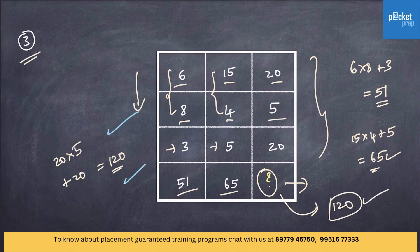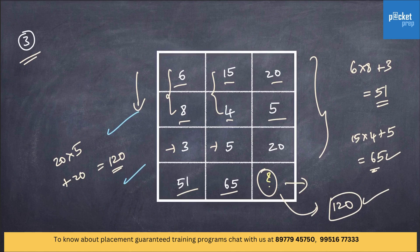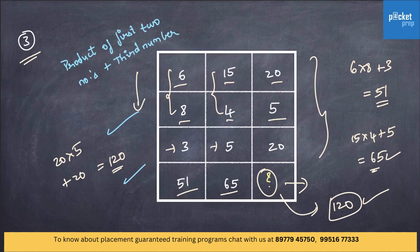So, unlike the previous questions, this has a different format. It is the product of the first two numbers in vertical direction plus the third number which gives the value.